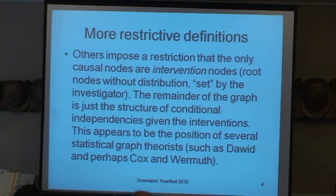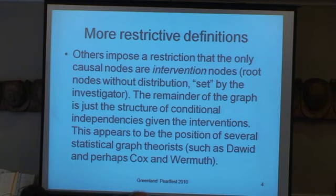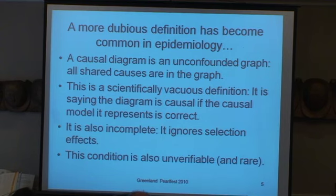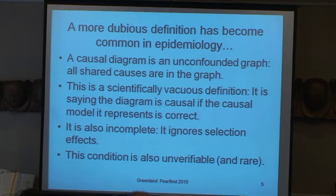More restrictive definitions exist. It's sometimes hard for me to tell with Dawid, Cox, and Varamuth exactly how skeptical they are. But it seems some people say that restrictions should be made so that the only causal nodes are intervention nodes. That leaves the remainder of the graph to just a structure of conditional independencies. One more dubious definition has become common in epidemiology, where they say a causal diagram is an unconfounded graph — all shared causes are in the graph. I think of that as a scientifically vacuous definition.